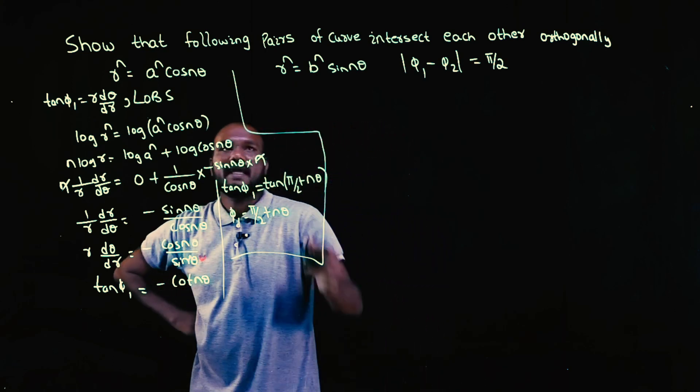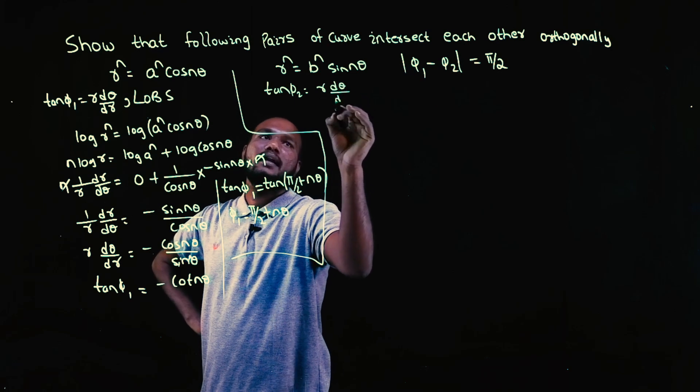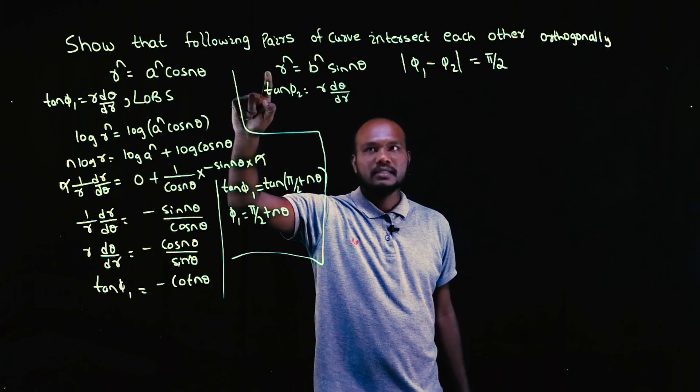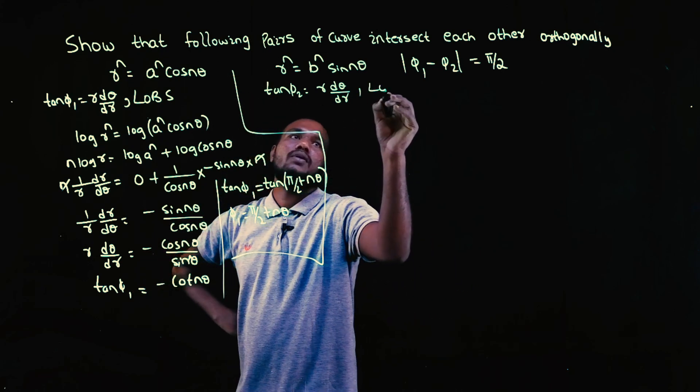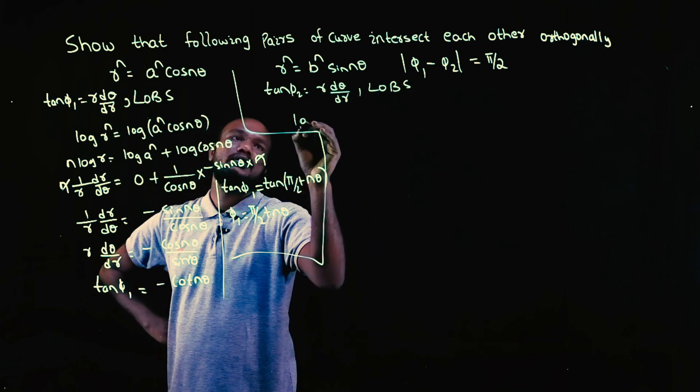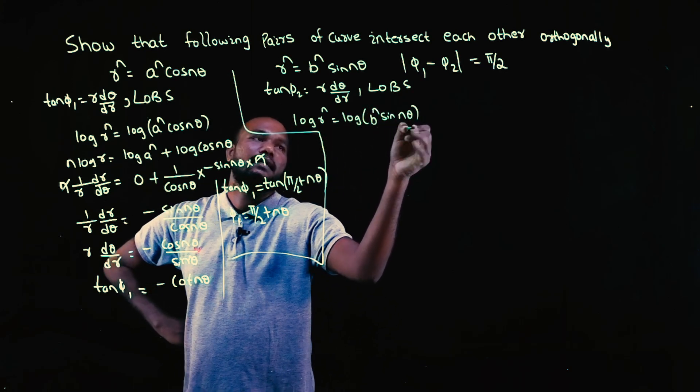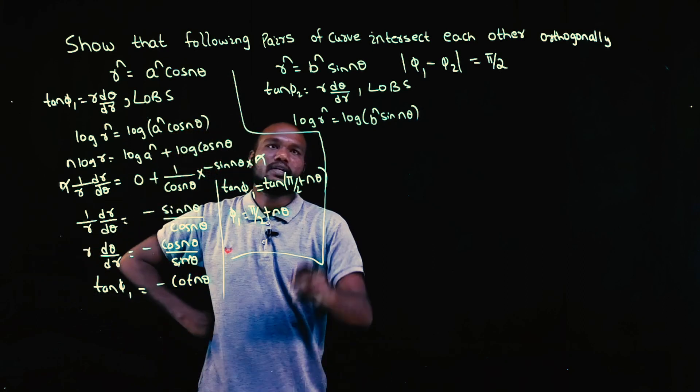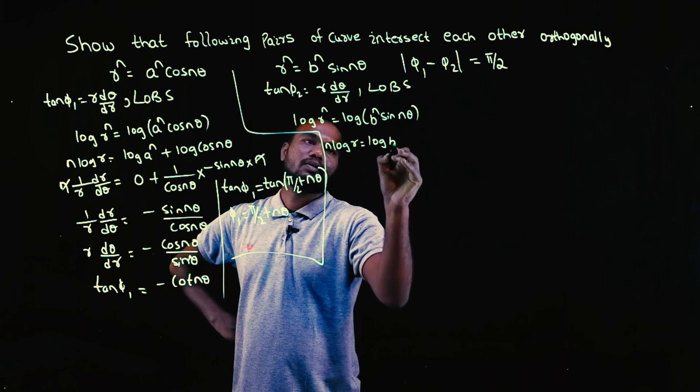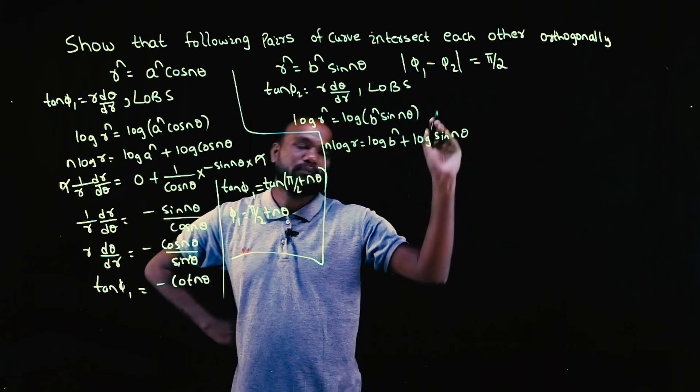Let's go to the second curve. Again I need tan phi 2, that is r into d theta by dr. R is not directly given in the question, so I have to take L.O.B.S - log on both side. Log r power n is equal to log B power n sin n theta. I can use log property: n log r equals log A plus log of sin n theta.